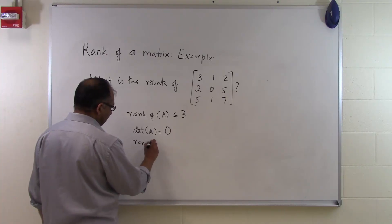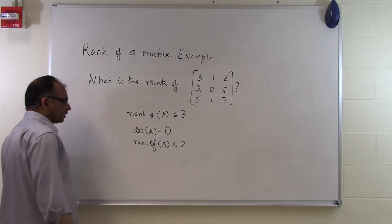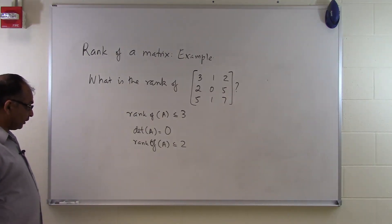So that tells me that rank of A is maximum of 2. It's less than or equal to 2. Let's go and see whether it is 2, 1, or 0. What is it?